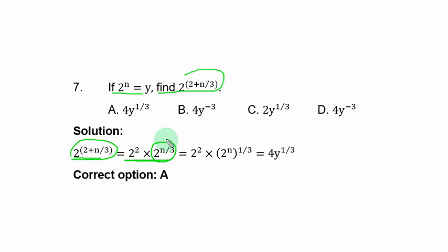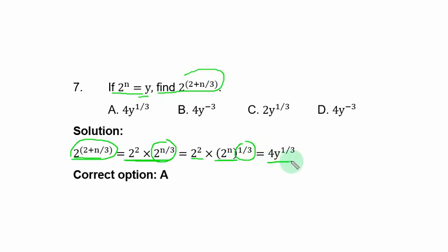Rewrite n/3 as (1/3)·n, so 2^(n/3) = (2ⁿ)^(1/3) = y^(1/3). Also 2^(2/3) = (2²)^(1/3) = 4^(1/3). Therefore 2^((2+n)/3) = 4y^(1/3), which equals (4y)^(1/3). The correct option is A.